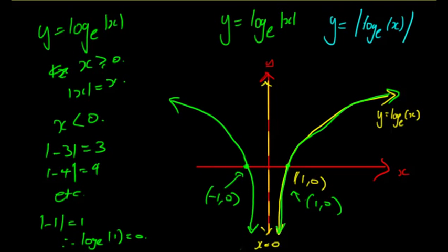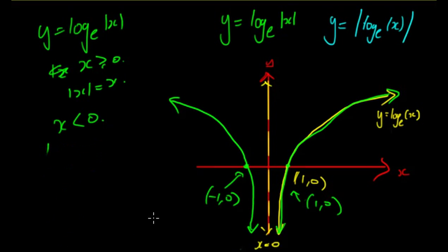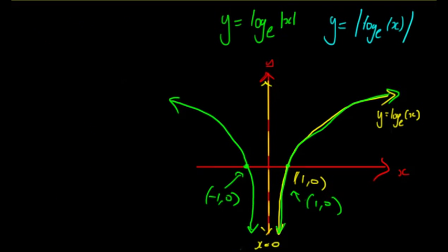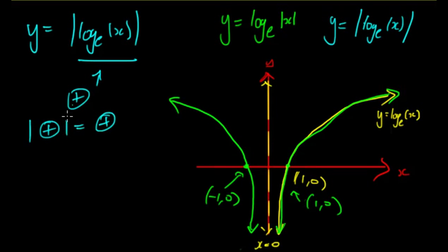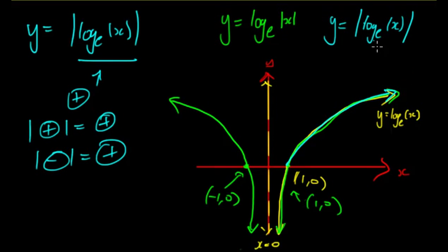Now what about y = |log_e(x)|? Here we're taking the modulus of the entire right-hand side. Effectively, whenever log_e(x) is positive, it stays positive. Whenever it's negative, the modulus makes it positive. So along the part of the graph where y is already positive, it's going to be the exact same graph — y = |log_e(x)| looks identical to y = log_e(x) for that portion.